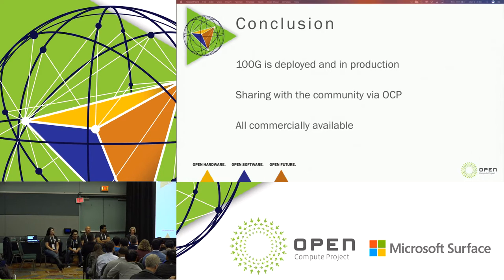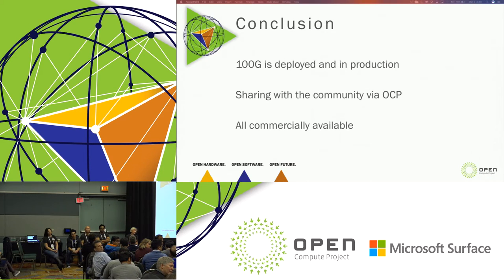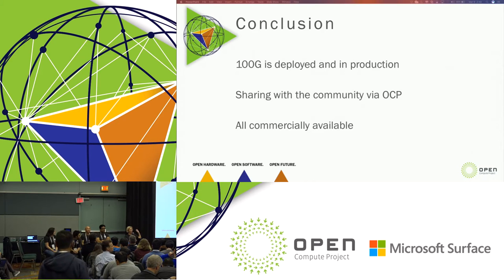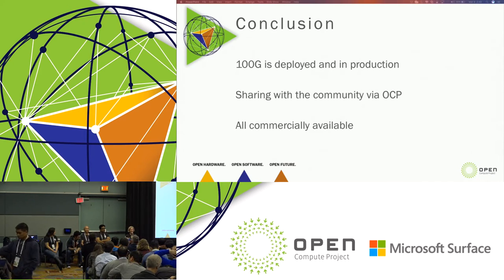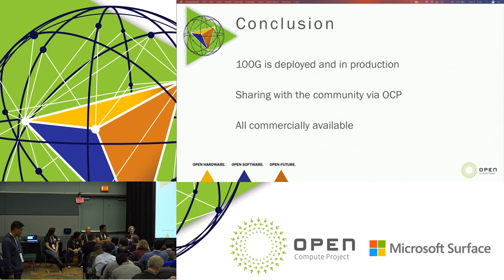Question: Can you comment on the Facebook data center interconnection — the speeds, types of fiber, etc.? I think we covered some of that, and there's a blog post I'd be happy to share. Our fabric switch architecture uses single-mode fiber, duplex fiber, CWDM4 optics. We've been very open about sharing that.